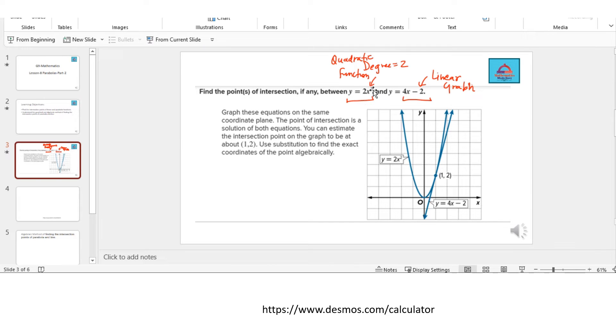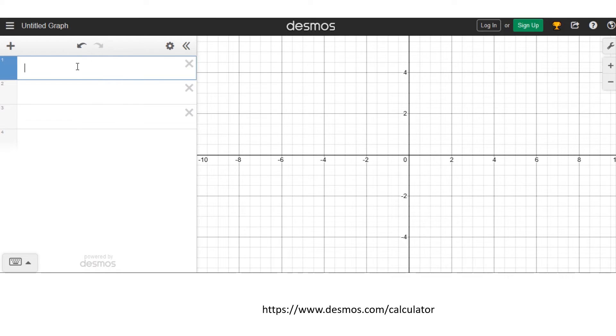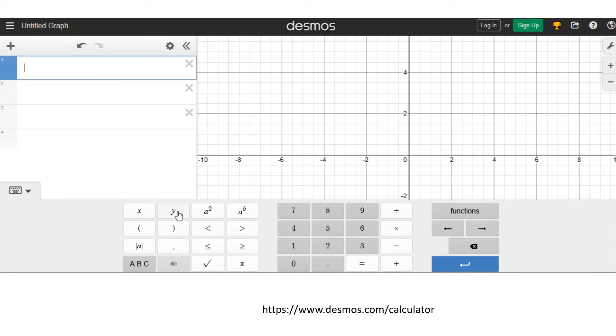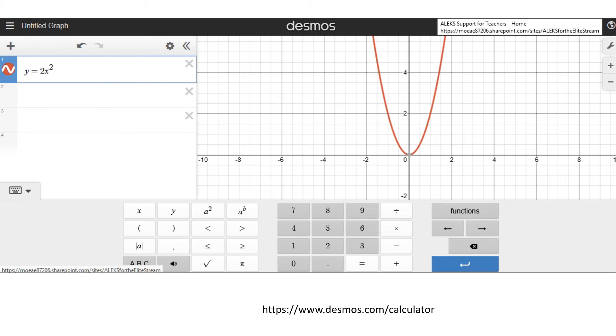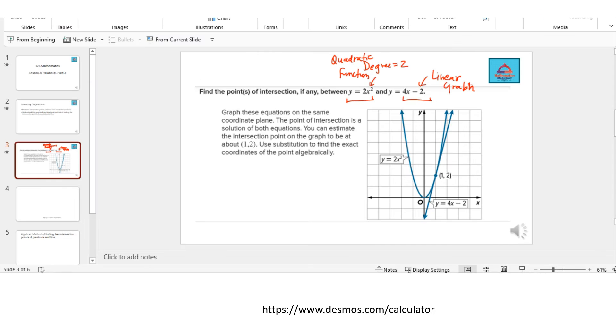So y equals 2 times x squared. I'm doing it from Desmos here: y equals 2x to the power 2. That's your parabola. In seconds you've got this red one—it's an upward parabola with a vertex at the origin.